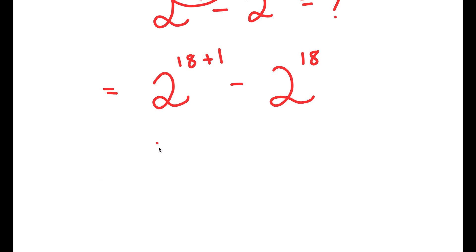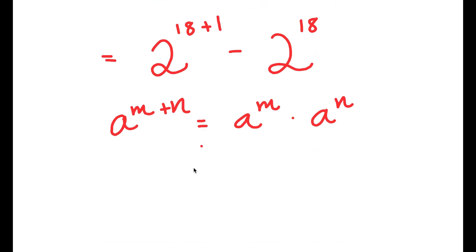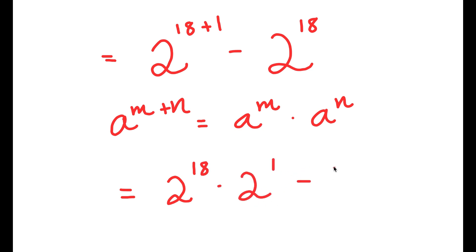If I have something in the form a to the power of m plus n, this is equal to a to the power of m times a to the power of n. So 2 to the power of 18 plus 1 is equal to 2 to the power of 18 times 2 to the power of 1, and now I have this minus 2 to the power of 18.